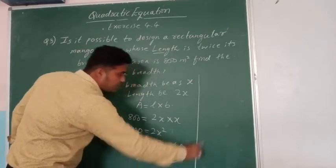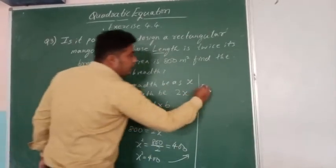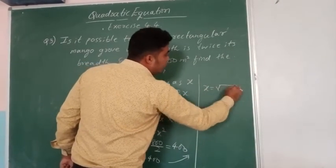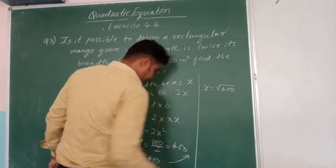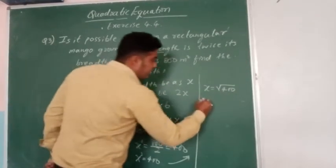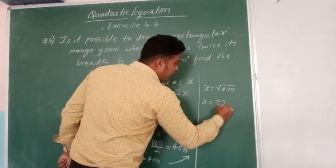Then after this, I will solve. Just observe. It becomes X is equal to square root of 400. Then X is equal to plus or minus 20.